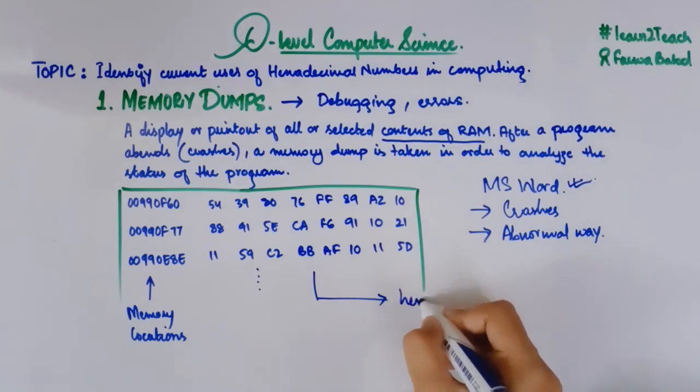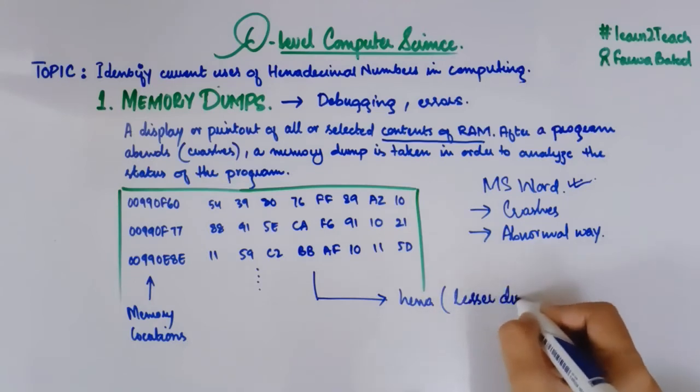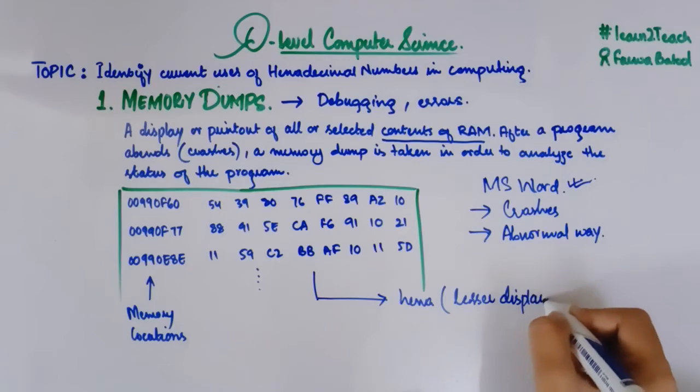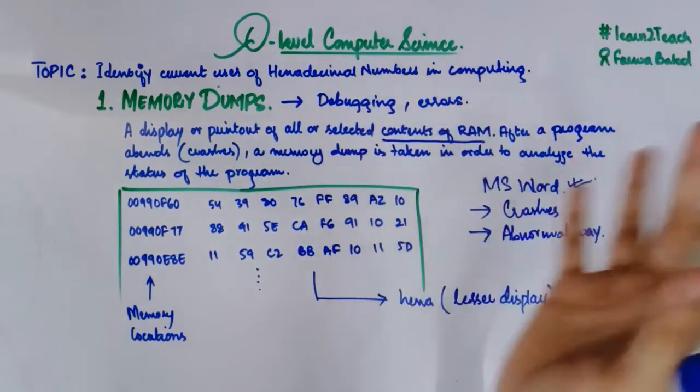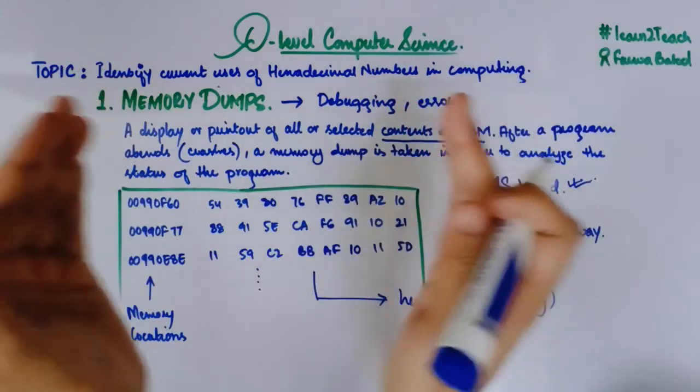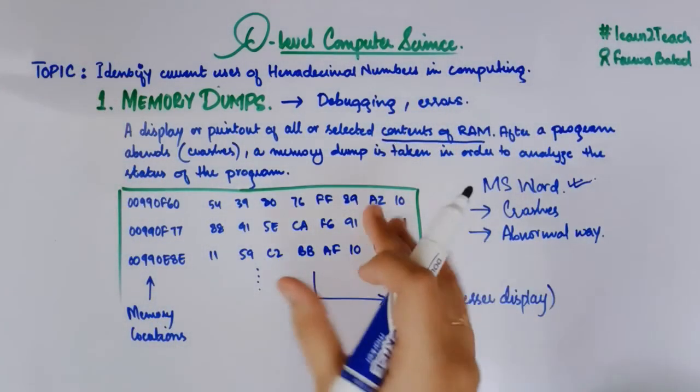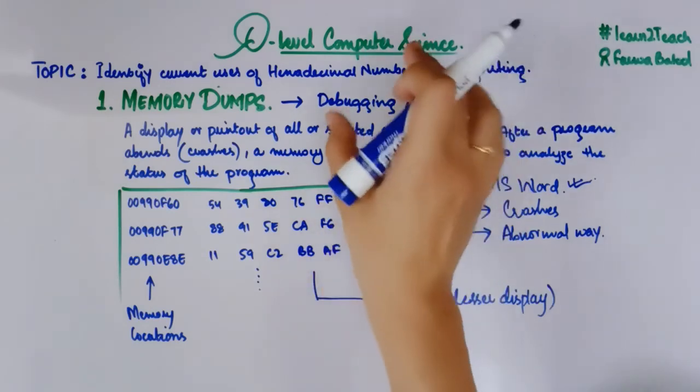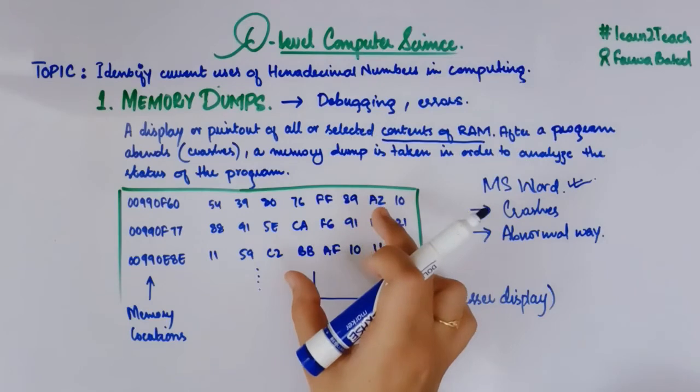Why is it so? Why? Because it is easier for us to display it in a hexadecimal number system. Why? Because it takes less display space. I can show more of my memory content in a lesser space. So this is the reason behind using hexadecimal numbers in order to show memory dumps or memory content.